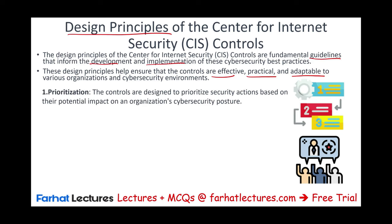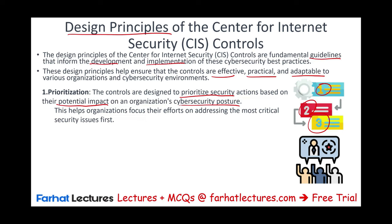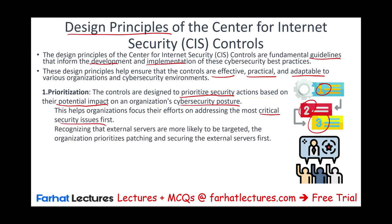The first principle is prioritization. The controls are designed to prioritize security actions based on their potential impact on the organization's cybersecurity — ranking risks by severity and impact. This helps the organization focus on the most critical security issues. For example, recognizing that external servers are more likely to be targeted makes that a priority, so patching and securing the external servers comes first.